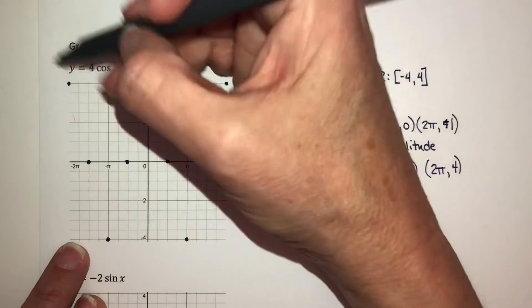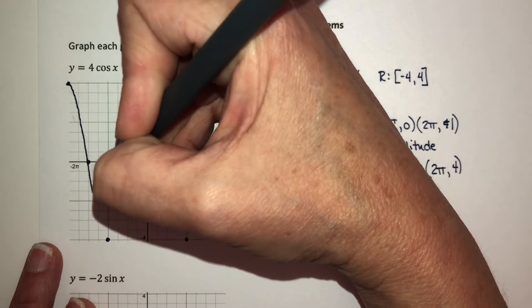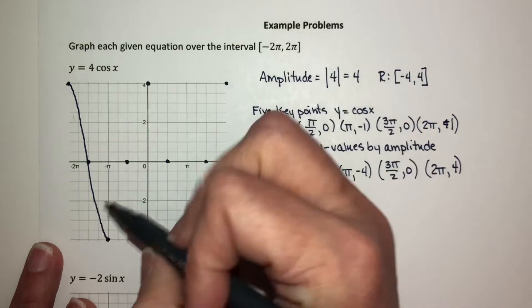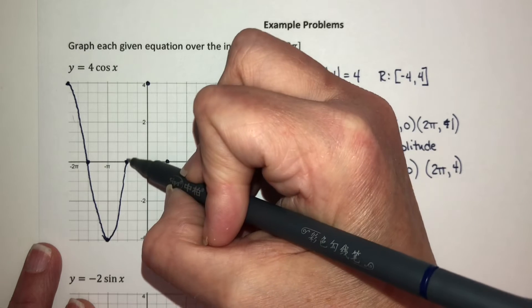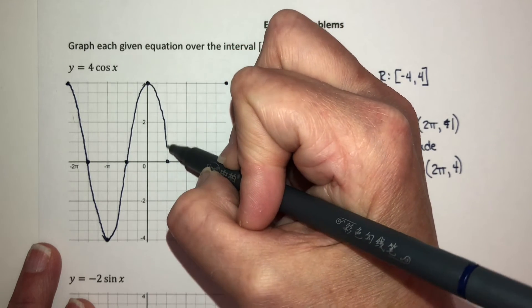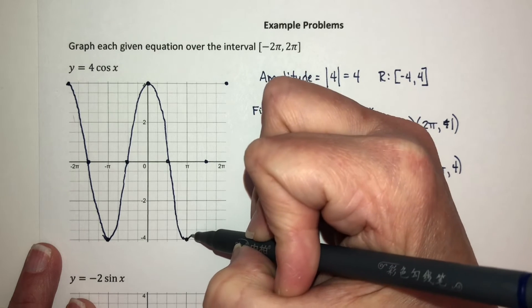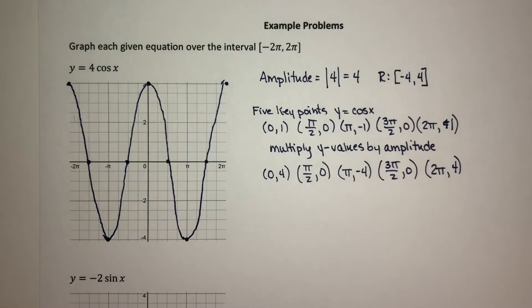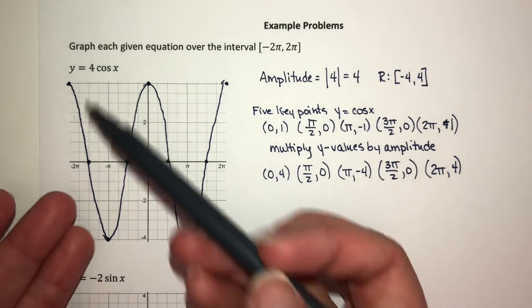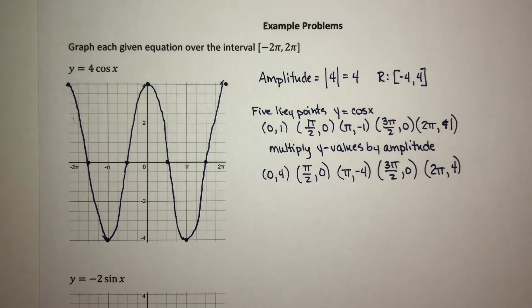Now connect these with a smooth curve. You definitely don't want to make these giant pointed things. And we have a graph that looks something like that. It is the graph of cosine x, but stretched up and down by a factor of 4.